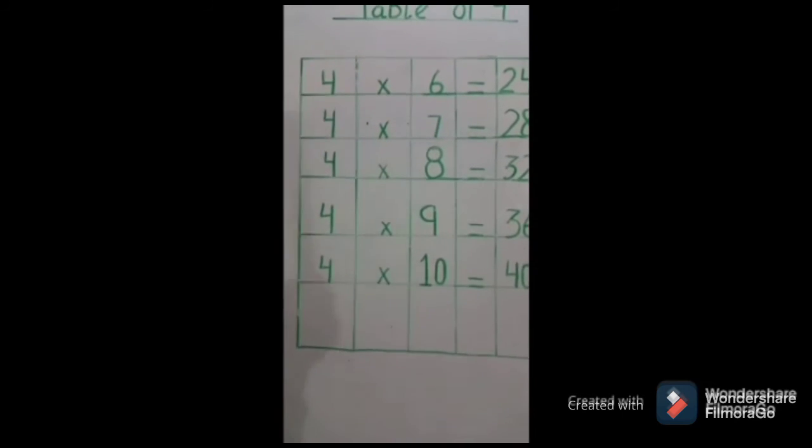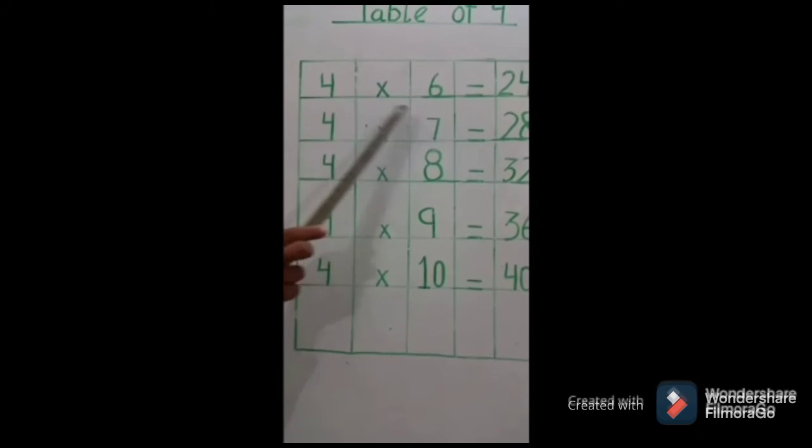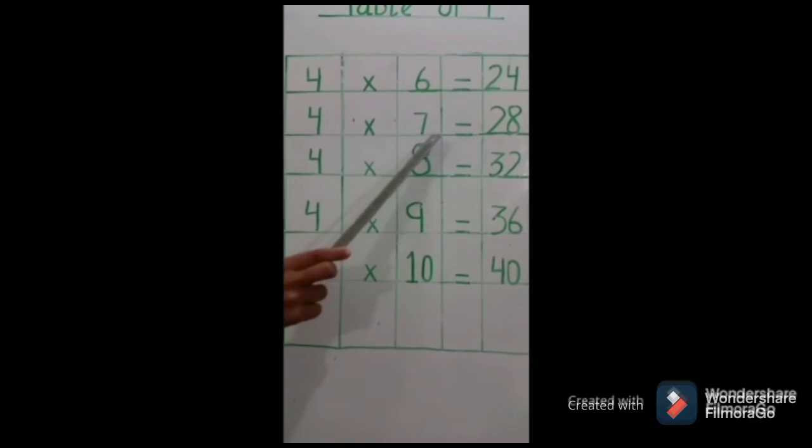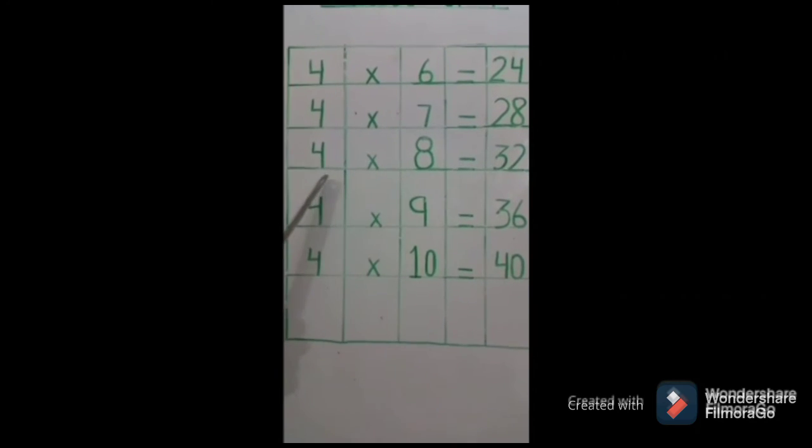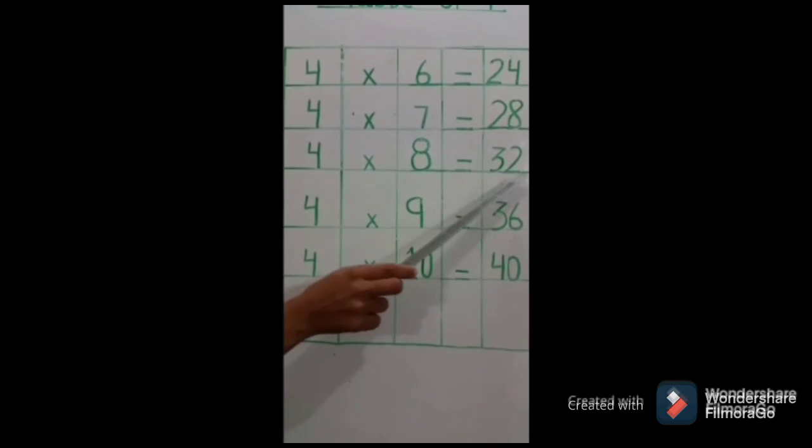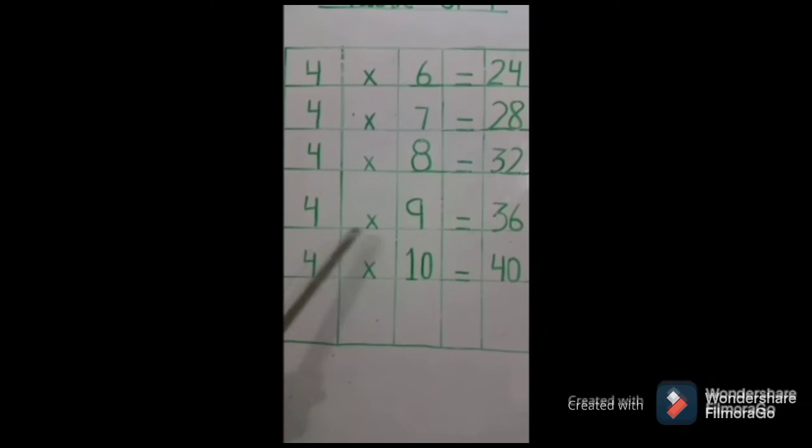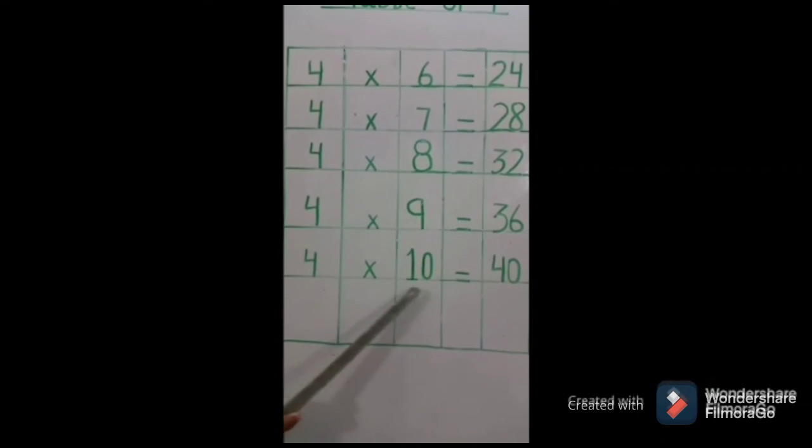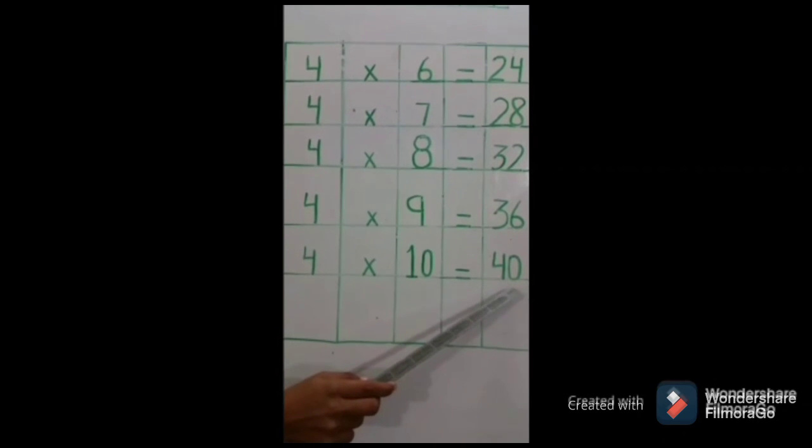Repeat your lesson: 4 sixes are 24, 24. 4 sevens are 28, 28. 4 eights are 32. 4 nines are 36. 4 tens are 40, 40.